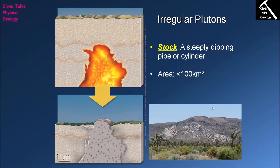Here we can see a picture of a stock. It's marked out by these lighter grey rocks — you can see one side coming up here, then coming down here, and the other side there, coming around like so. This is the stock right here, and the surrounding rock represents the material being intruded by the magma.